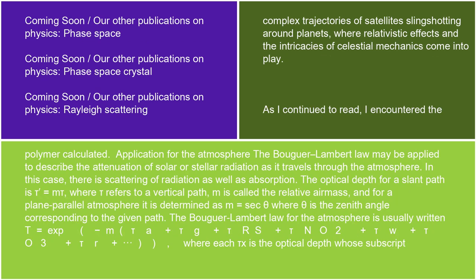Application for the atmosphere. The Bouguer-Lambert Law may be applied to describe the attenuation of solar or stellar radiation as it travels through the atmosphere. In this case, there is scattering of radiation as well as absorption. The optical depth for a slant path is τ = mτ, where τ refers to a vertical path. M is called the relative air mass, and for a plane-parallel atmosphere, it is determined as M = sec(θ), where θ is the zenith angle corresponding to the given path.